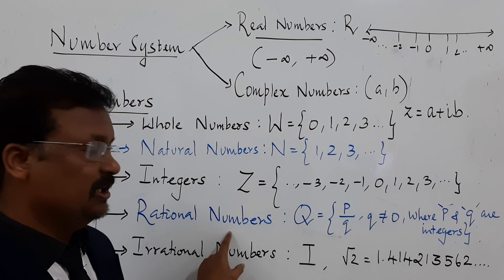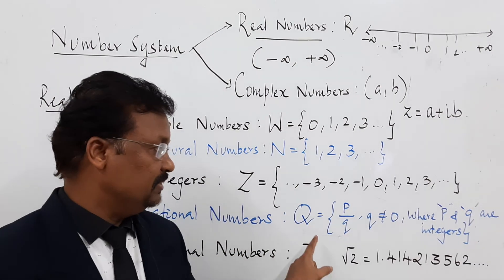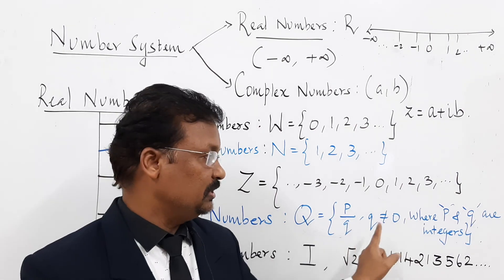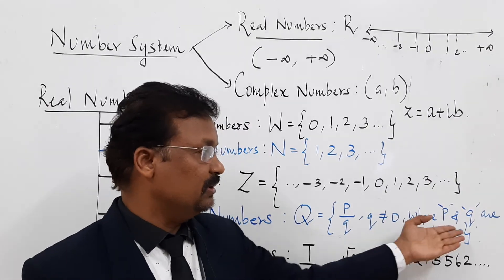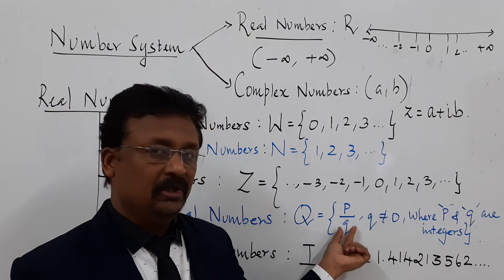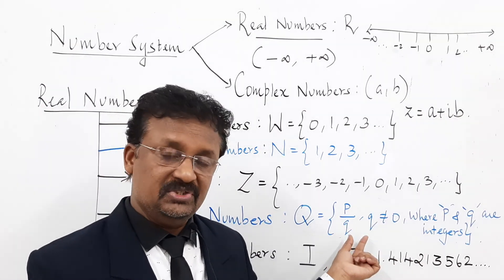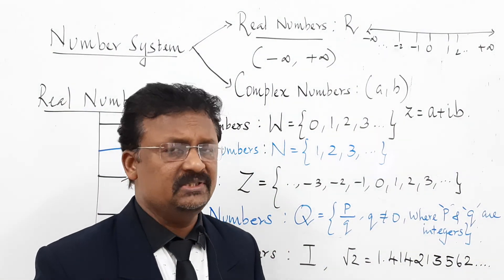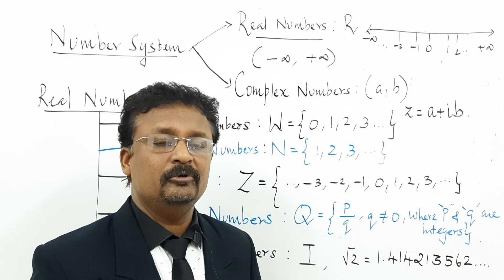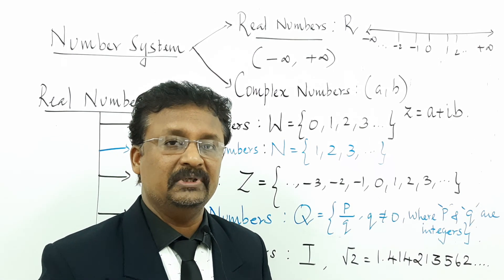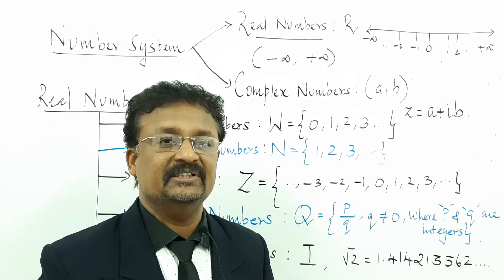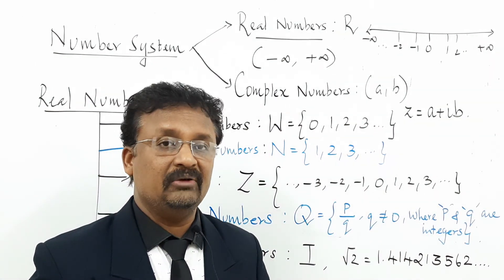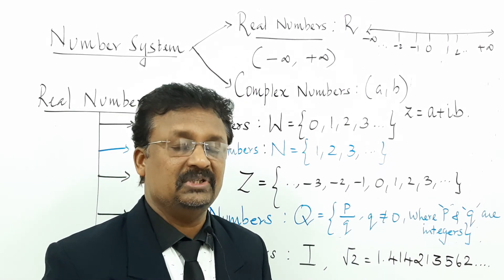The next subset is rational numbers, represented by the letter Q. A rational number is a set of all numbers in P by Q form, where Q is not equal to 0, and P and Q are integers. If Q becomes 0, then P divided by 0 is an undefined form — infinity on your calculator. For example, 5 by 4 is a rational number; using a calculator you get 0.8, which is a terminating decimal. But 5 by 0 is not a real number — it is infinite.